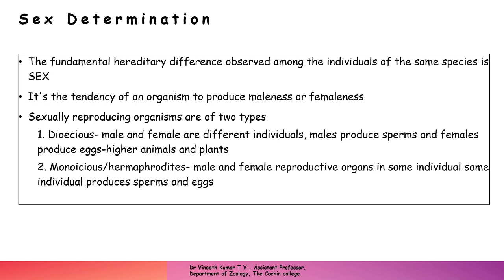Different types of hermaphrodites can be observed. In any case, monoecious or hermaphrodite animals are those animals which have the capacity to produce both male gametes as well as female gametes.